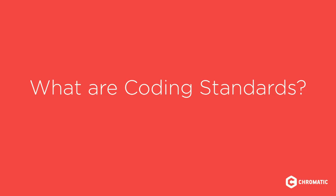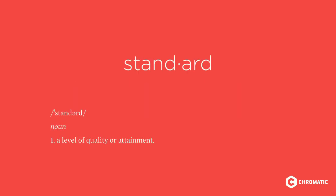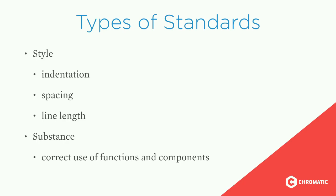So what are coding standards? A standard is a level of quality or attainment. I find it useful to divide standards into two types: style, which includes things like indentation, spacing, and line length; and substance, which includes things like correct use of functions and components.